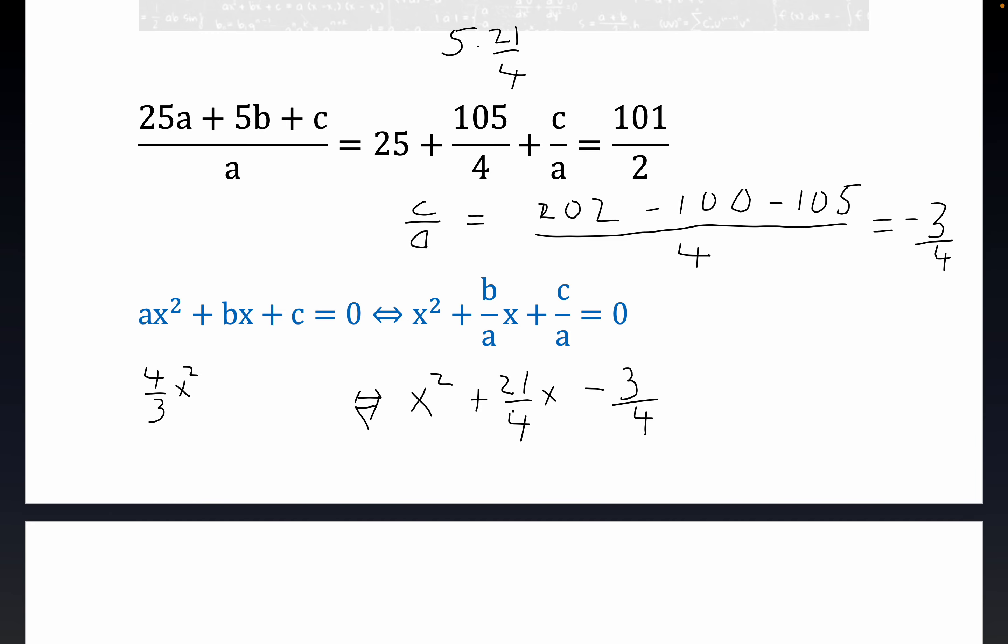If you multiply this by four thirds, what do you get? Plus seven. You have the four is canceled, plus seven X. And of course the point of multiplying by the reciprocal would, you would get minus one.